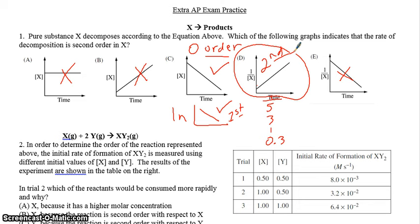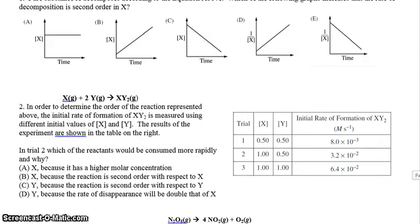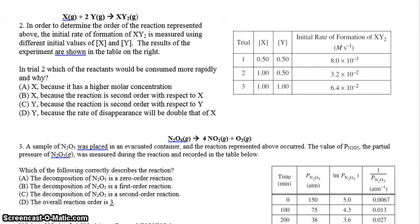Let's try number 2. Number 2 gives you a table like we've done in our lab. The table summarizes three possible experiments with varying concentration of X and Y, and then you've got the initial rate of formation. Very similar to what you've seen before. In order to determine the order of the reaction represented above, you'll notice it's X plus 2Y gives you XY2, a very generic reaction. Different initial values of X and Y were measured, and that's what we find in the table. The results of the experiments are shown in the table.